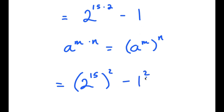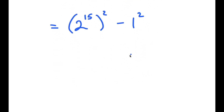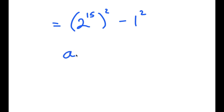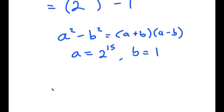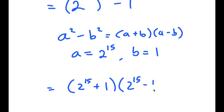And negative 1 is the same thing as 1 squared. Now using the difference of squares formula — a squared minus b squared equals a plus b times a minus b — where a is 2 to the power of 15 and b is 1, I get 2 to the power of 15 plus 1 times 2 to the power of 15 minus 1.